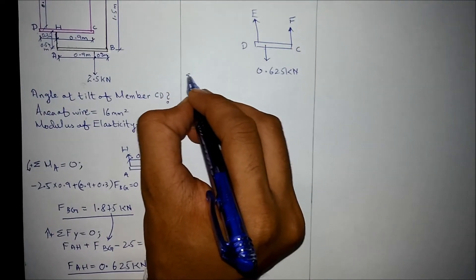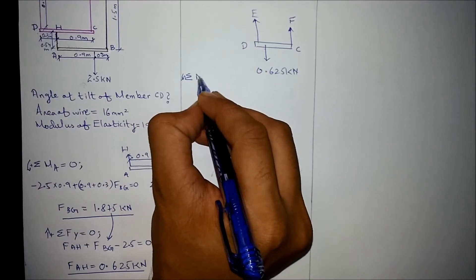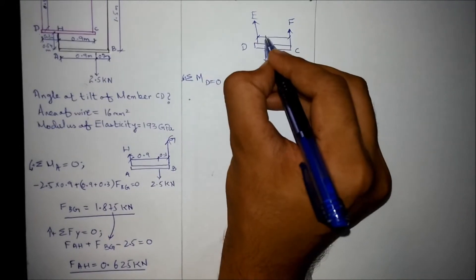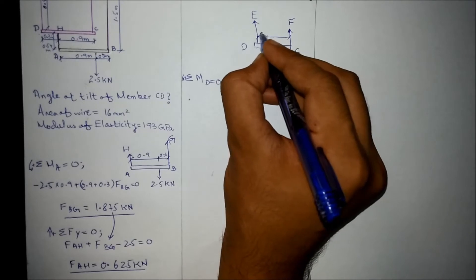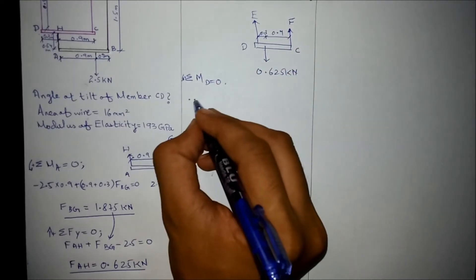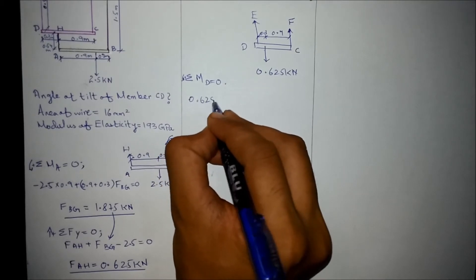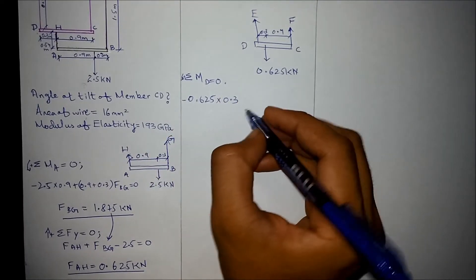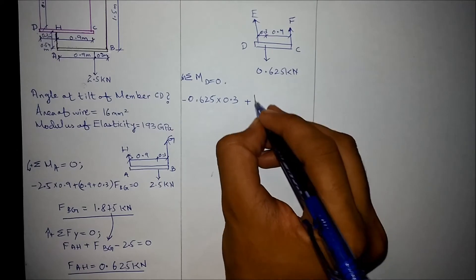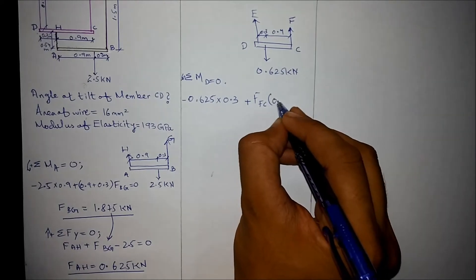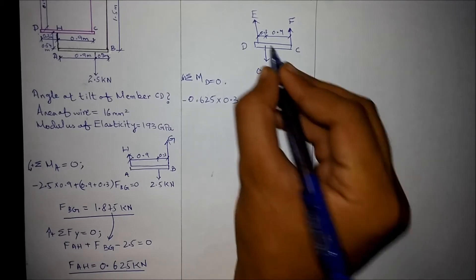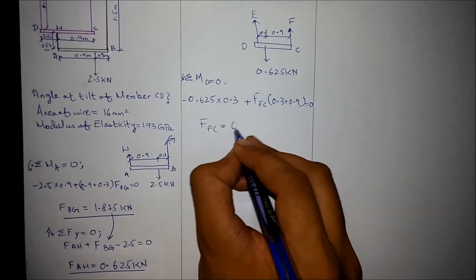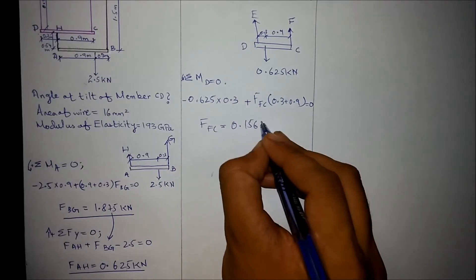Now applying the moment equation about point D. The distances are 0.3 and 0.9 meters. 0.625 into 0.3, it is negative because it's rotating in clockwise direction, plus FFC into 0.3 plus 0.9, that is the lever arm from here to here, equals zero. FFC comes out to be 0.15625 kN.